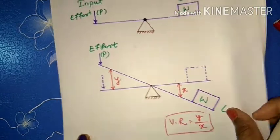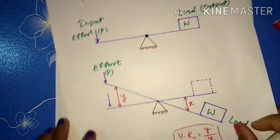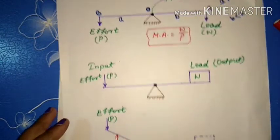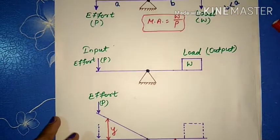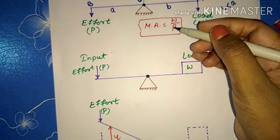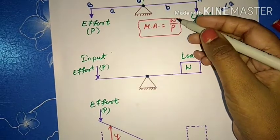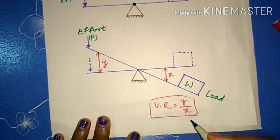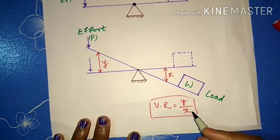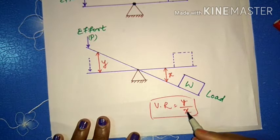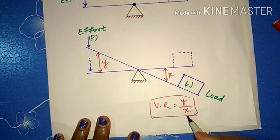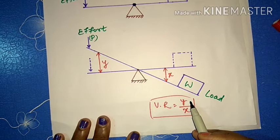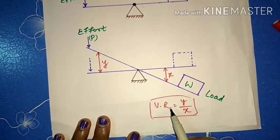In this case, mechanical advantage equals W divided by P — that is, load divided by effort. And velocity ratio equals y divided by x, where x is the distance moved by the load and y is the distance moved by the effort in lifting the load.